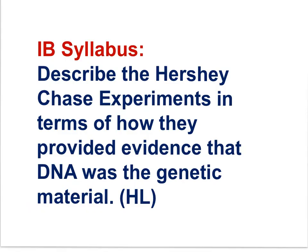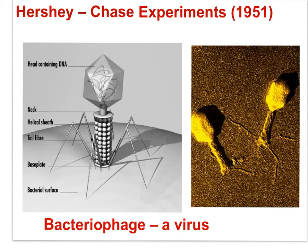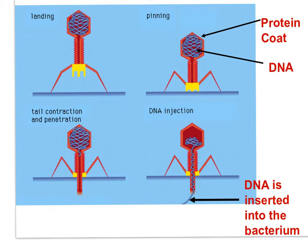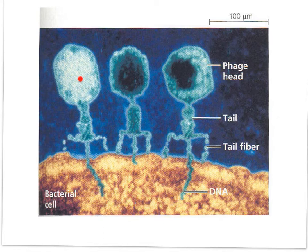The next piece of evidence came from Hershey and Chase. The IB syllabus statement: describe the Hershey-Chase experiments in terms of how they provided evidence that DNA was the genetic material. In 1951, Hershey and Chase did two elegant experiments to support the work of Avery and Griffith. They worked with a bacteriophage — a virus that infects bacteria. The bacteriophage is a virus composed of a protein coat with a molecule of DNA within. The virus lands on a bacterium and proceeds to insert its DNA into the bacterium — this is called viral infection. Here is a micrograph of three bacteriophage viruses inserting their DNA into a bacterium.